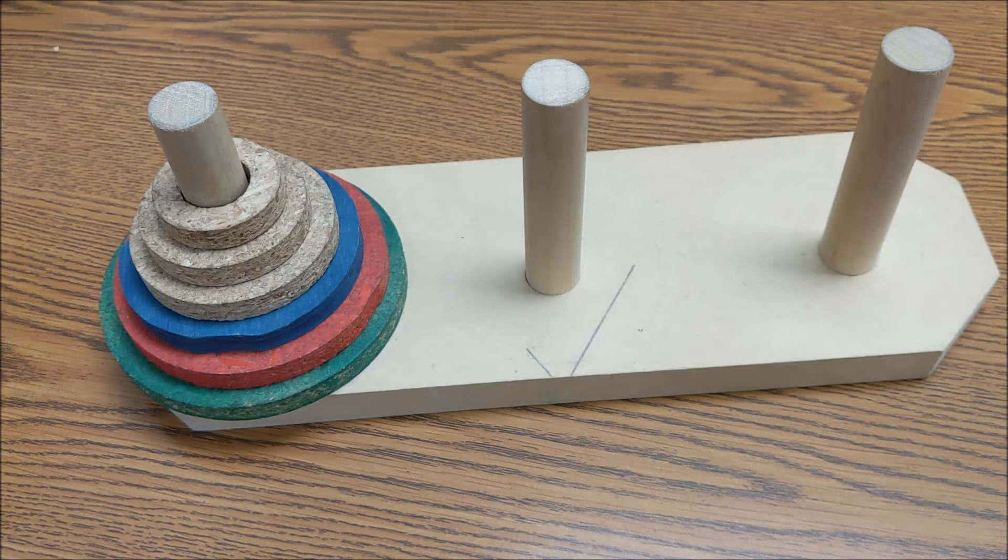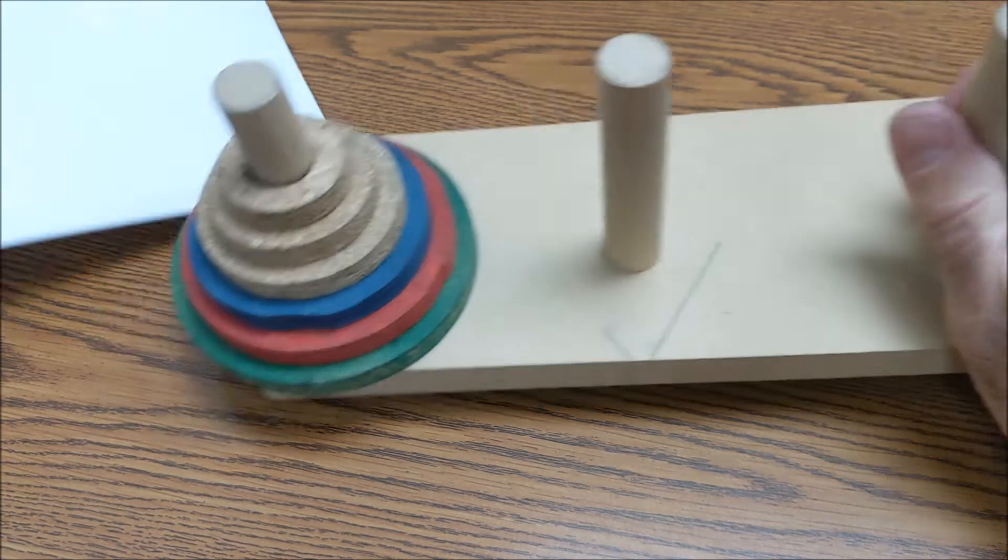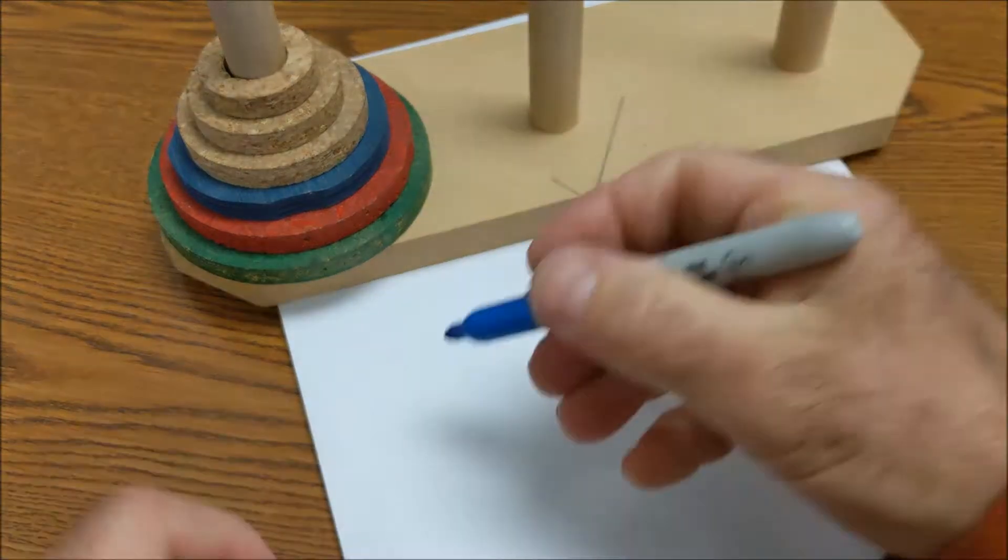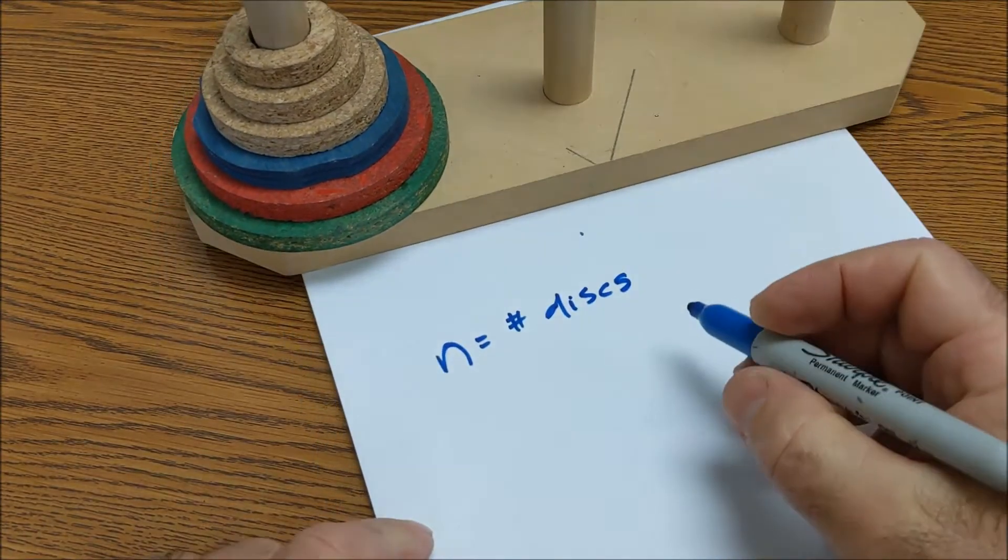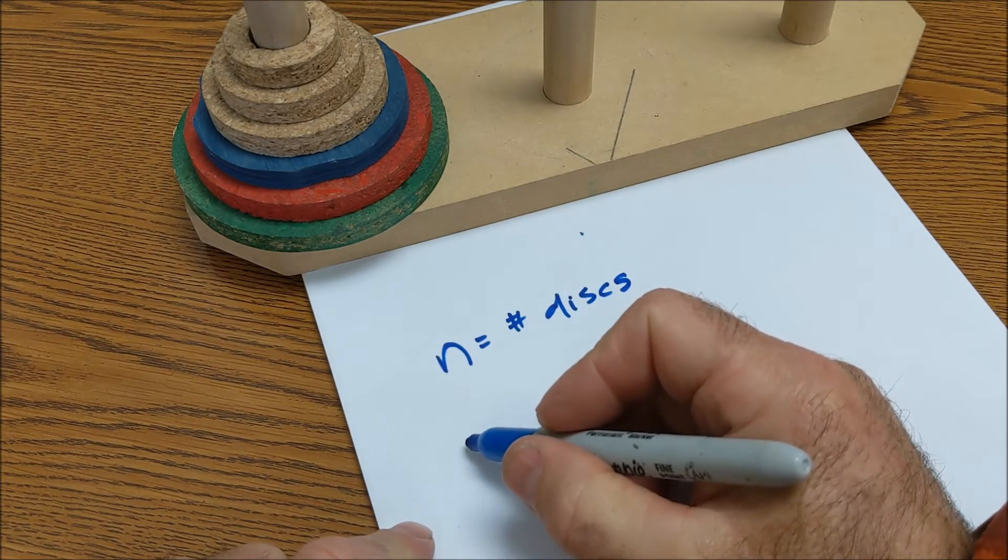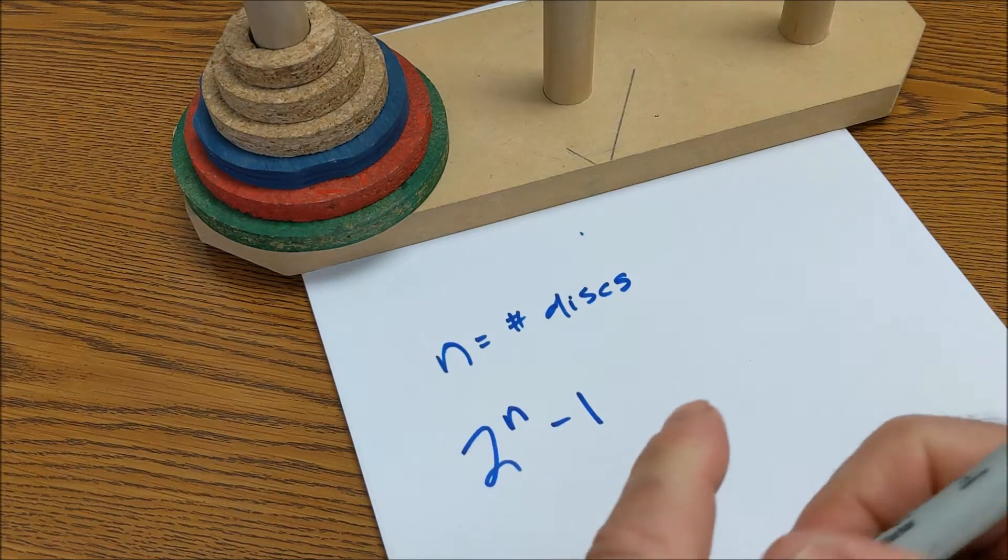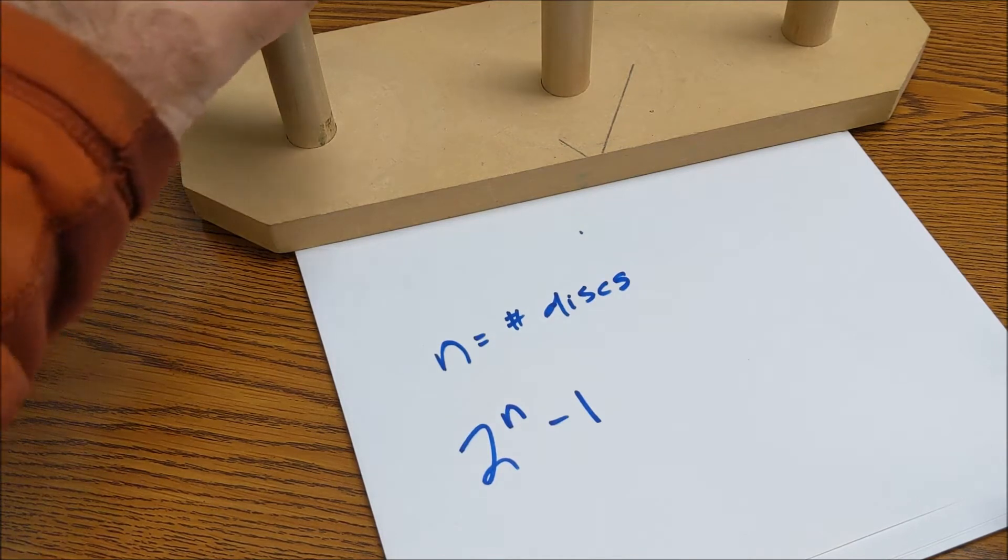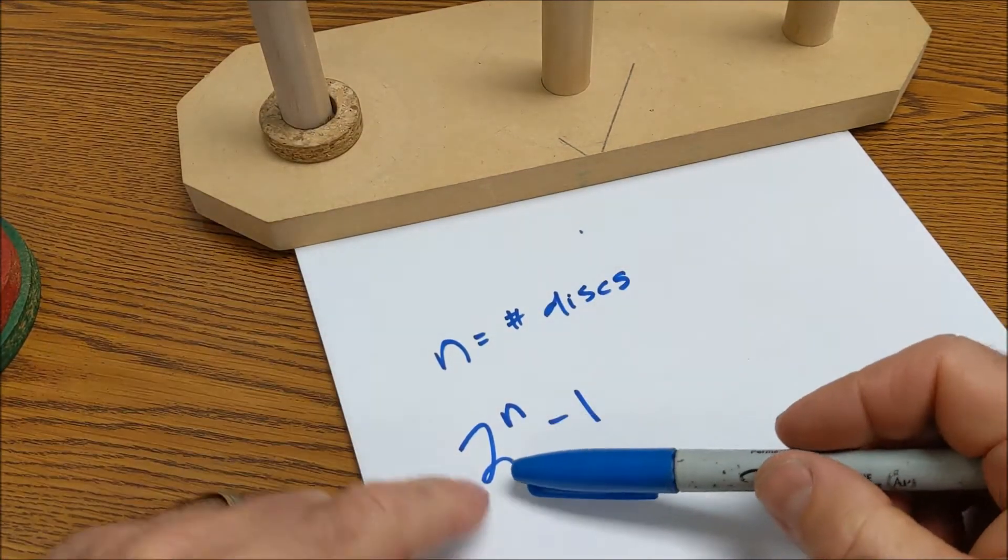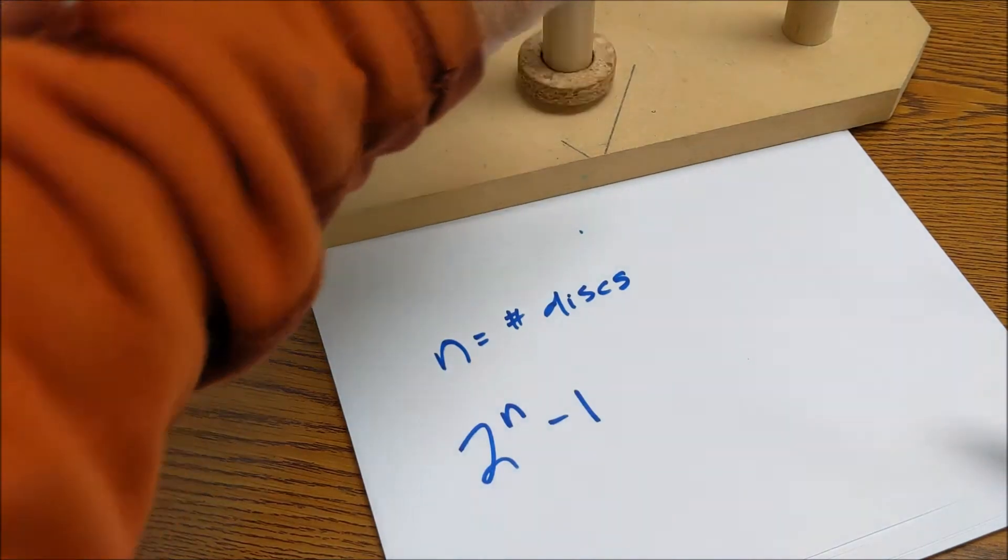And the number of ways, the minimum number of ways you could do this here. If n is the number of disks, then the number of ways you could do this is a recursive algorithm, 2 to the n minus 1. So if I have one disk, that kind of makes sense. If I have one disk, I could do it in 2 to the first, 2 minus 1, one way, and there it is.